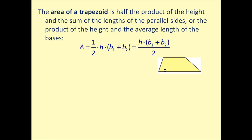Let's move on to probably the most involved area formula — the area of a trapezoid. The area equals half the product of the height and the sum of the lengths of the parallel sides, or the product of the height and the average length of the bases. Base 1 and base 2 are the parallel sides, and this is the height. As an example, if base 1 is 14 inches, base 2 is 10 inches, and the height is 6 inches, we'll use the first formula.